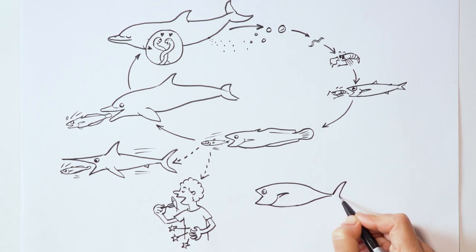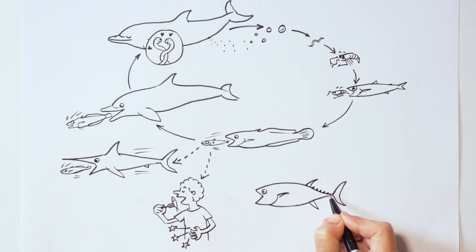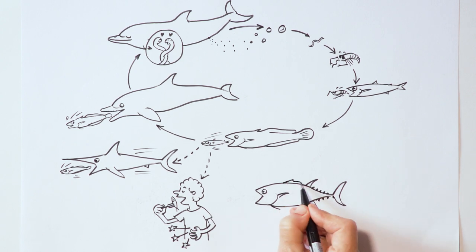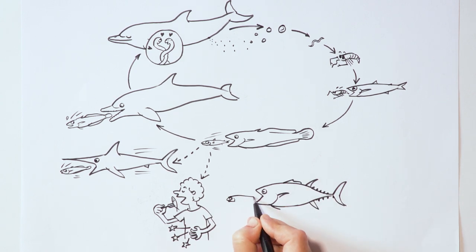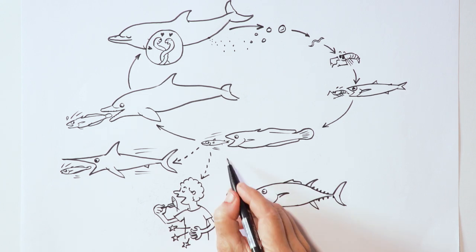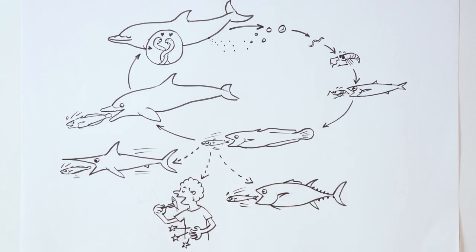Since tuna can raise their body temperature, the anisakis thinks, oh great, it's warm in here, I must be in a dolphin. And it gets ready to breed. But tuna don't keep a steady body temperature and the anisakis ends up dying.